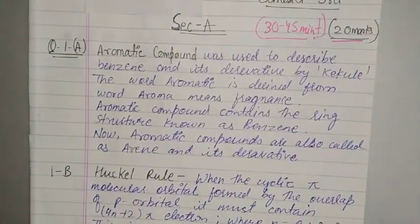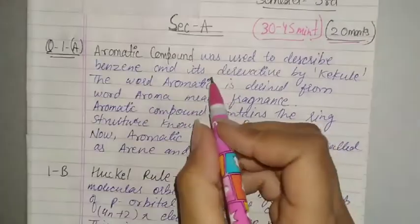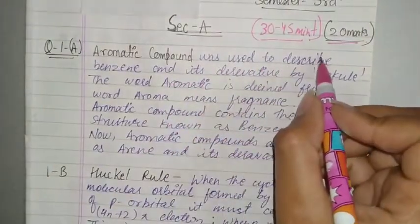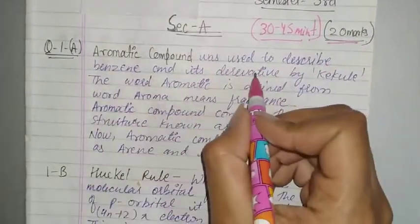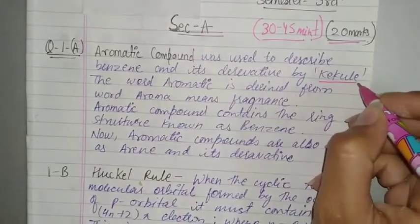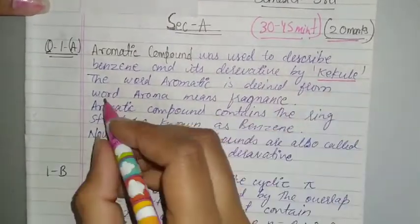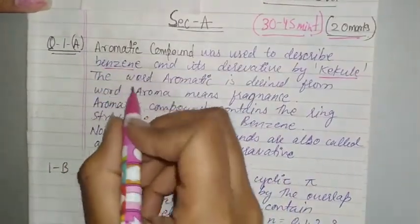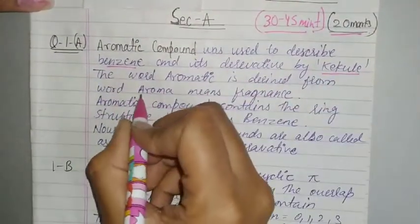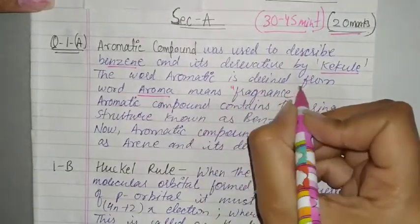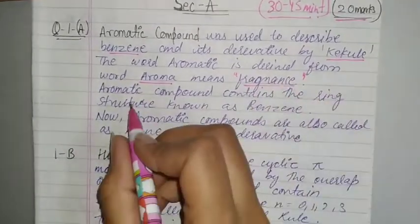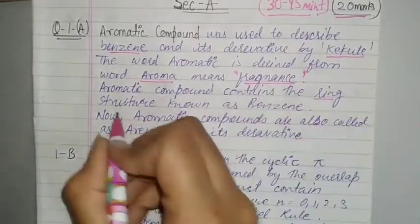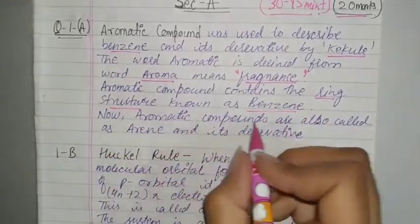First question: what are aromatic compounds and give example? Aromatic compound was used to describe benzene and its derivatives by Kekule. The word aromatic is derived from the word aroma which means fragrance. Aromatic compounds contain the ring structure known as benzene. Now aromatic compounds are also called as arenes and its derivatives.